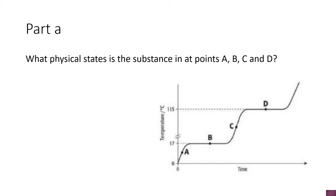Now let's get into the question — I hope you understood what the heating curve is. Part A: what physical state is the substance in at points A, B, C and D? Let's go with the easy ones first: B and D, which are on the horizontal lines, which I told you represent the phase changes.